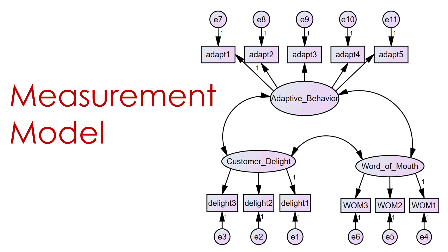When you're assessing a measurement model, SEM treats all of your unobservables as independent. You'll notice there are no paths going from one construct to another — we're not looking at structural paths between constructs at this point, just looking within. All independent constructs in SEM have a covariance between them, as you can see listed across all three: customer delight, word of mouth, and adaptive behavior. At this point we're just trying to assess whether I captured the unobservable construct with my measures.